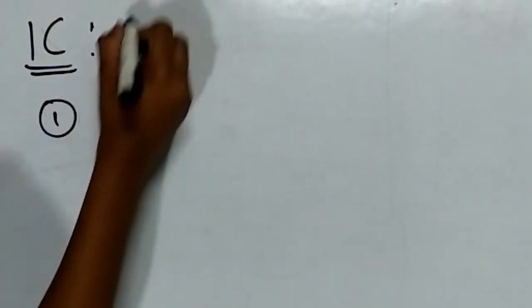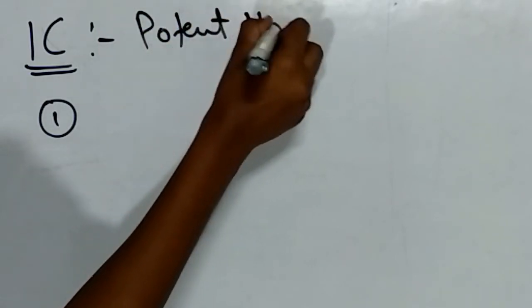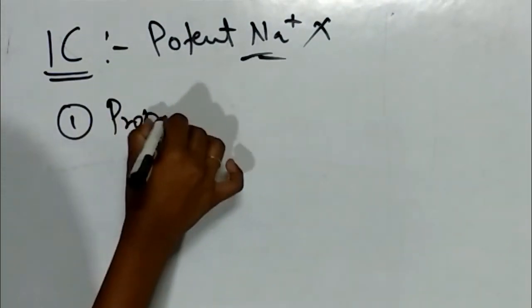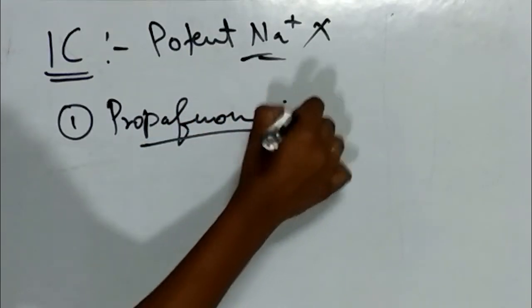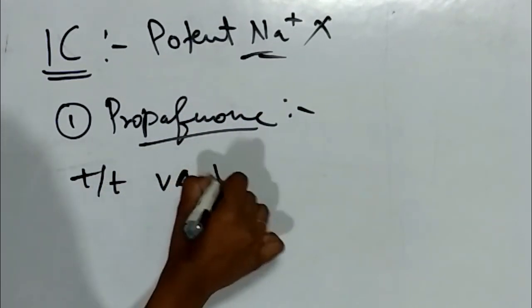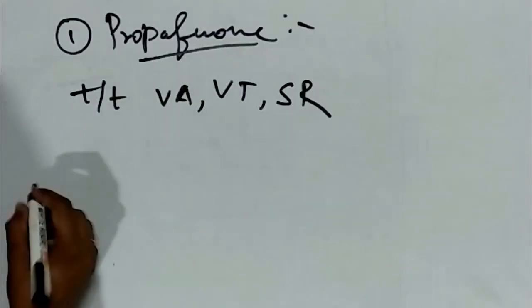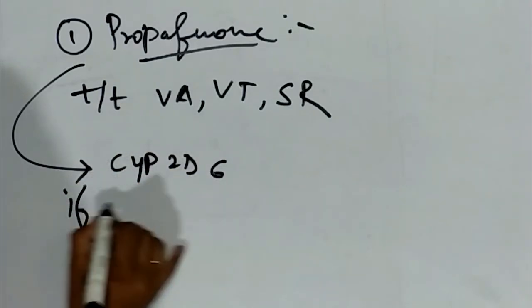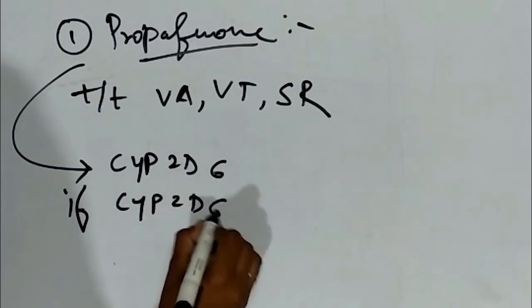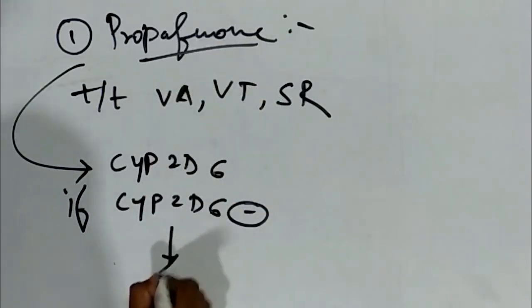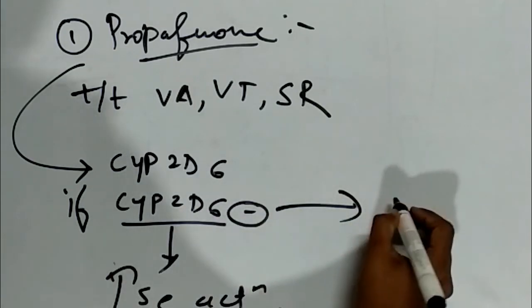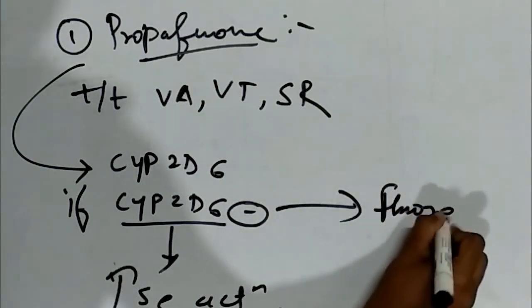Now we will see class 1C drugs. This is the most potent class of drugs which acts on sodium channels. The first drug is propafenone. Propafenone is used for ventricular arrhythmia, ventricular tachycardia, and sinus rhythm. The metabolism is by CYP2D6. If CYP2D6 inhibitors like fluoxetine, which is an SSRI, interact with propafenone, we will get increased action of propafenone.